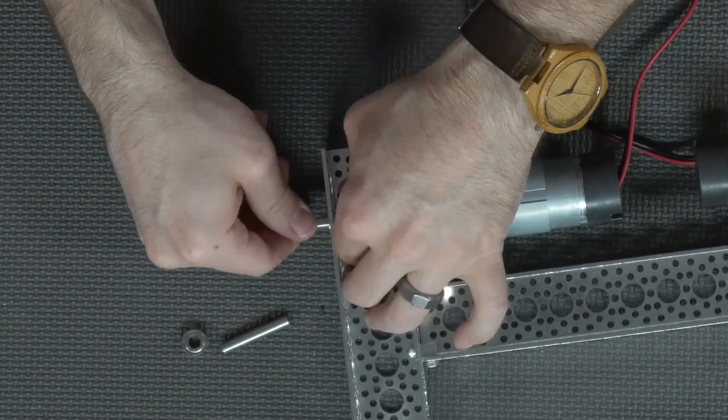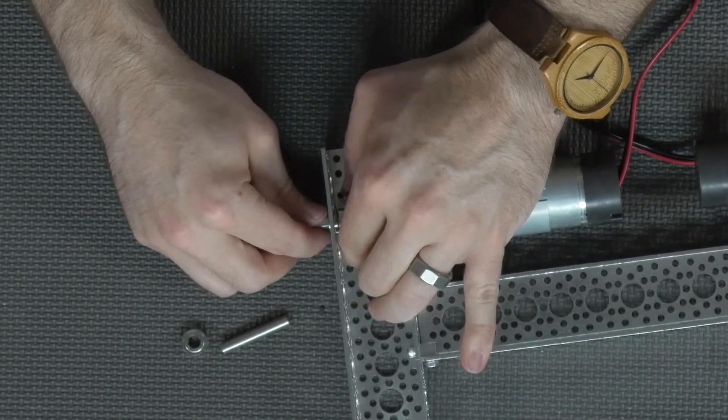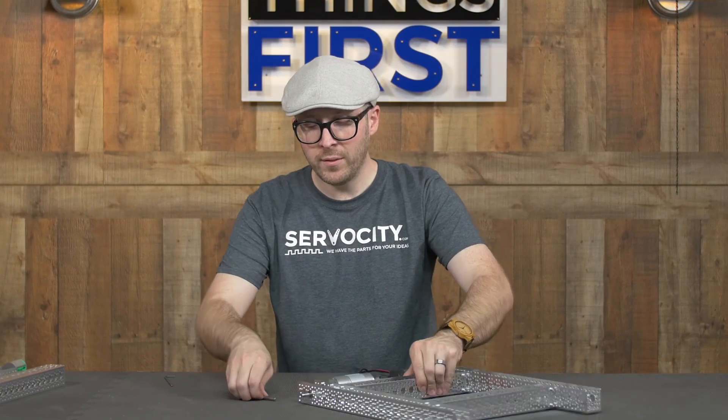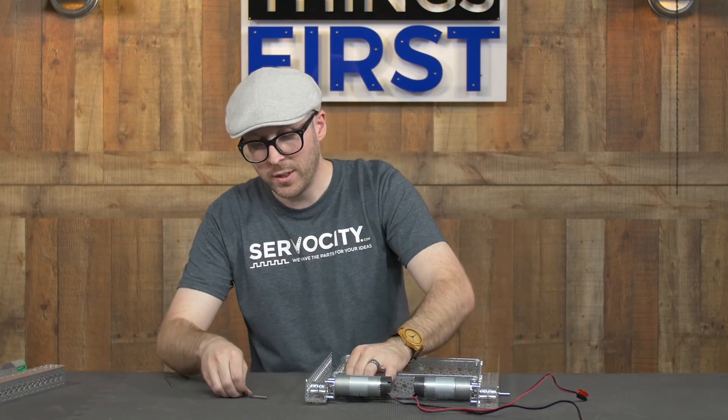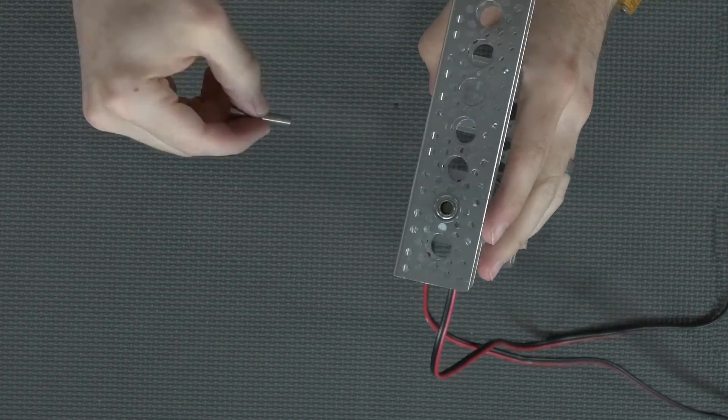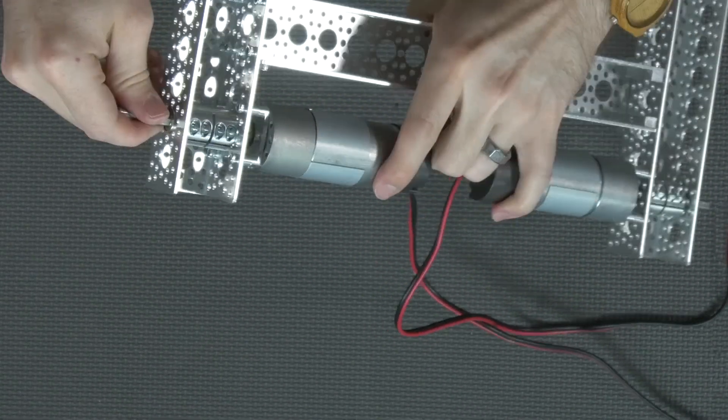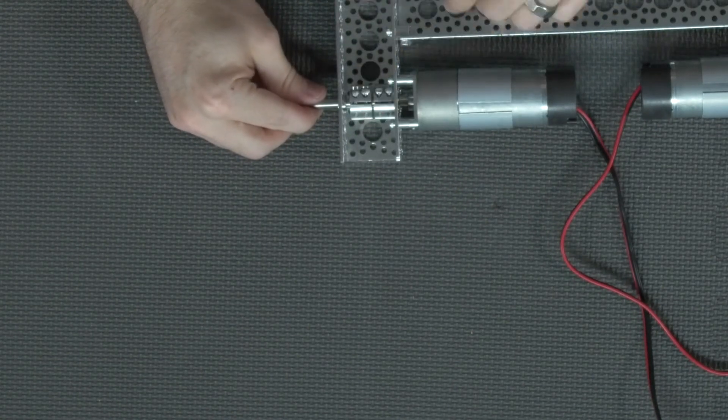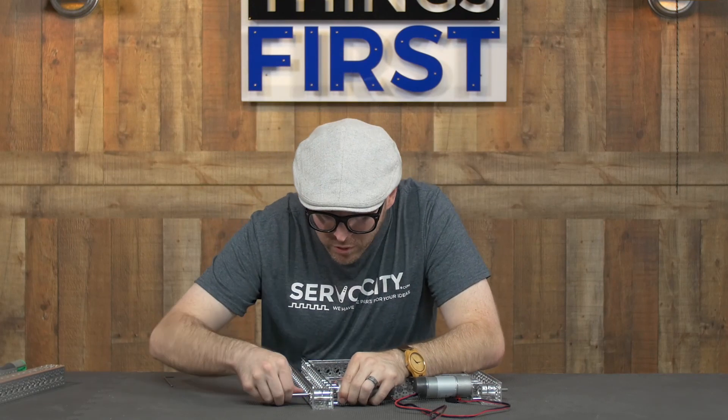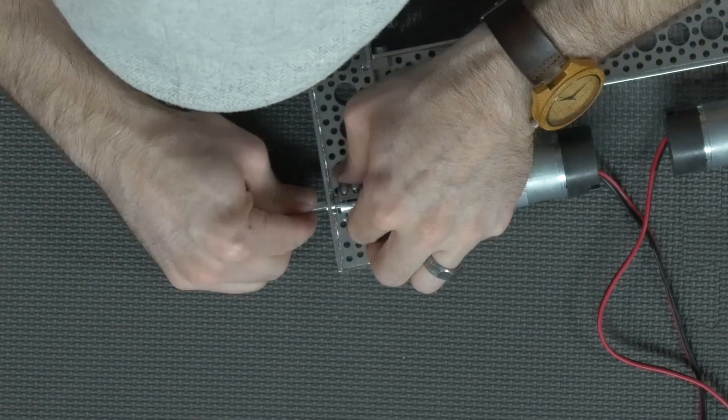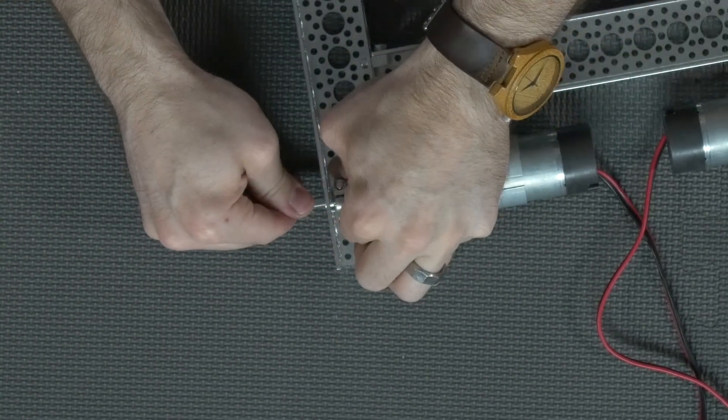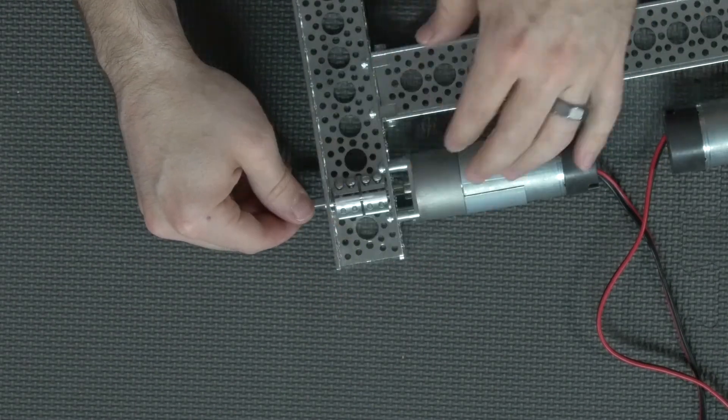I'm going to position my coupler so it's about centered within the channel with space on either side, and then we're going to do the same thing to the other one. Snap in the bearing, put in the shaft. You can rotate these clamping couplers so you can see right down the slit to make sure that you have your shaft in all the way. Then wiggle the clamping coupler to about the center there.